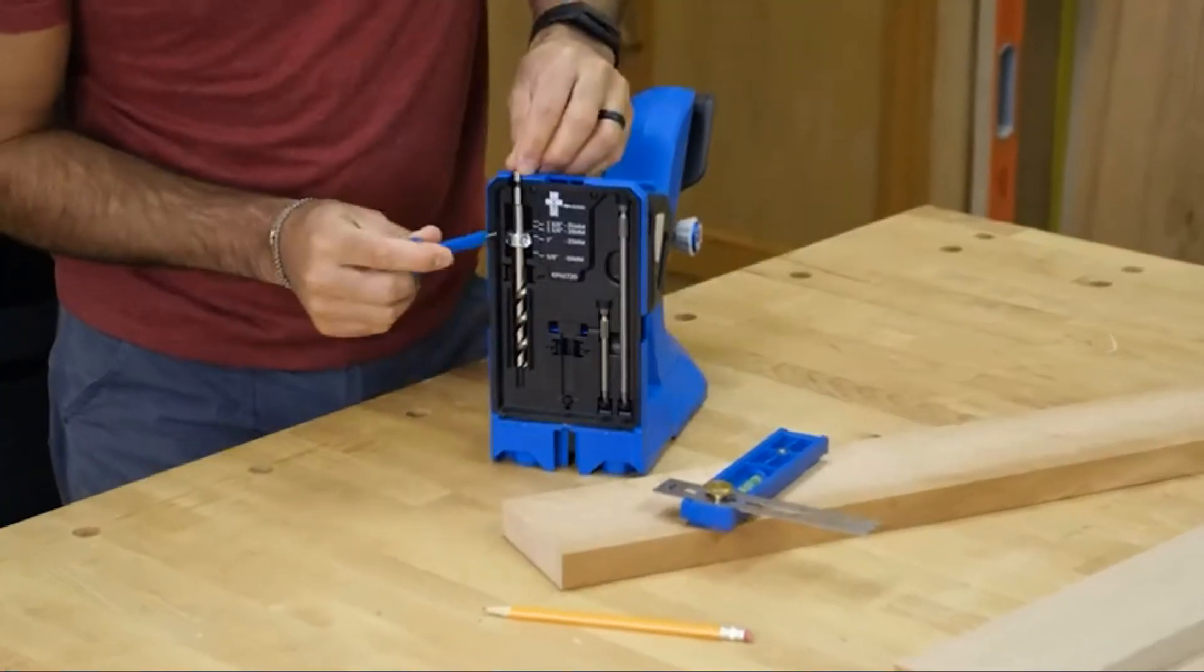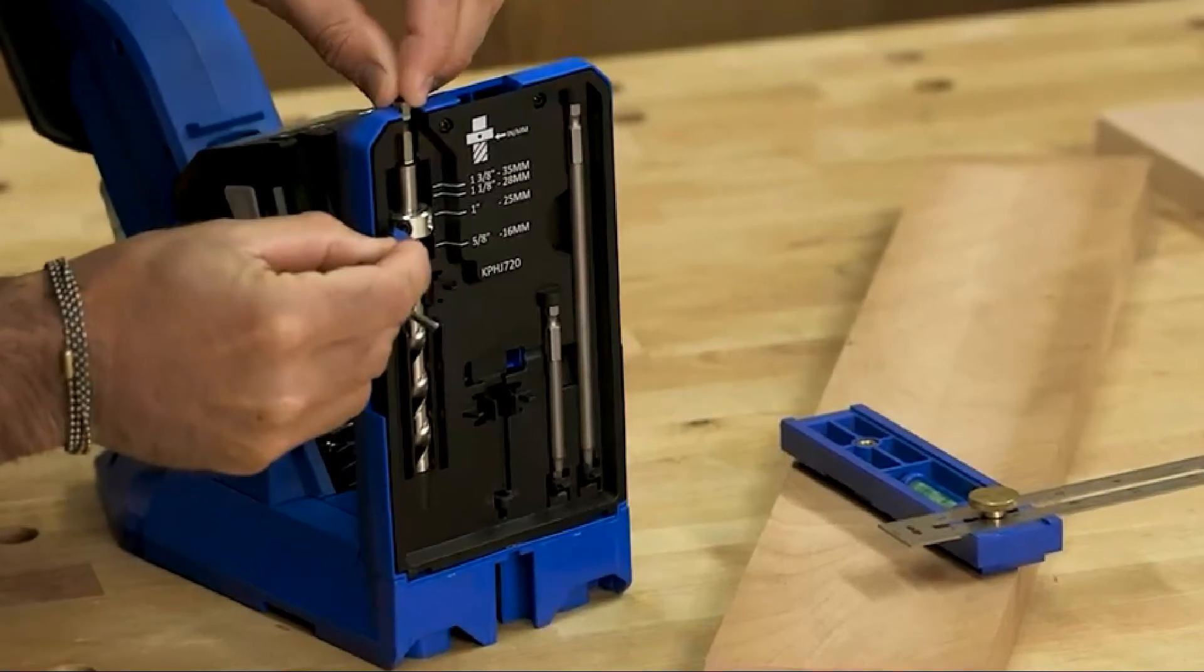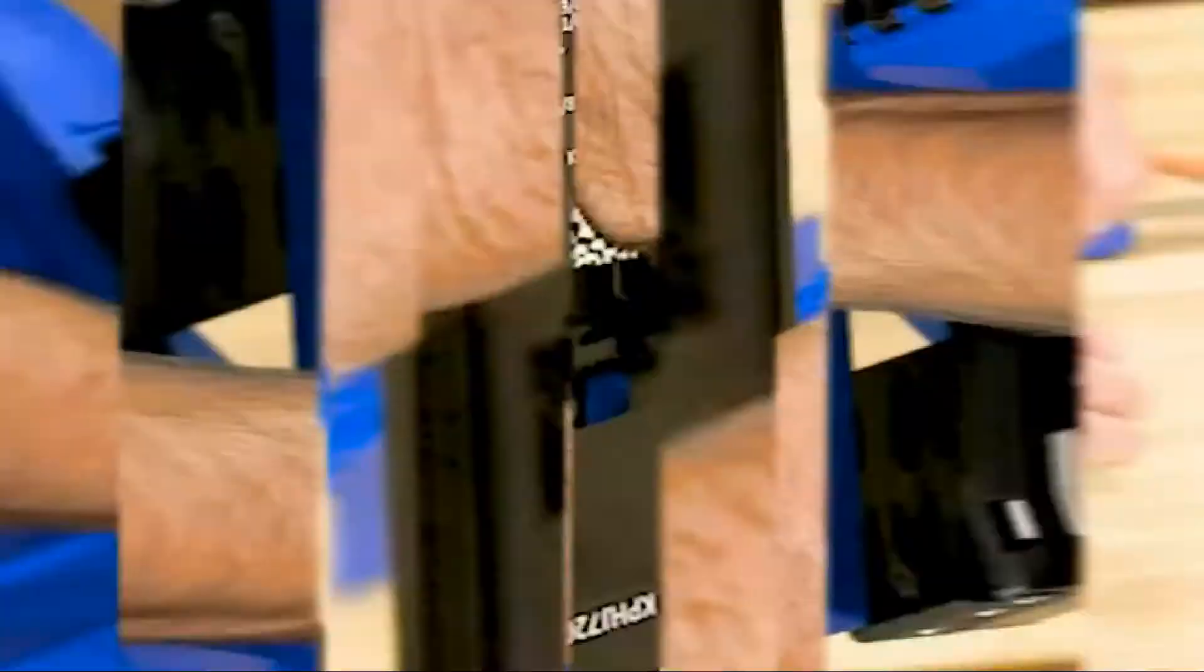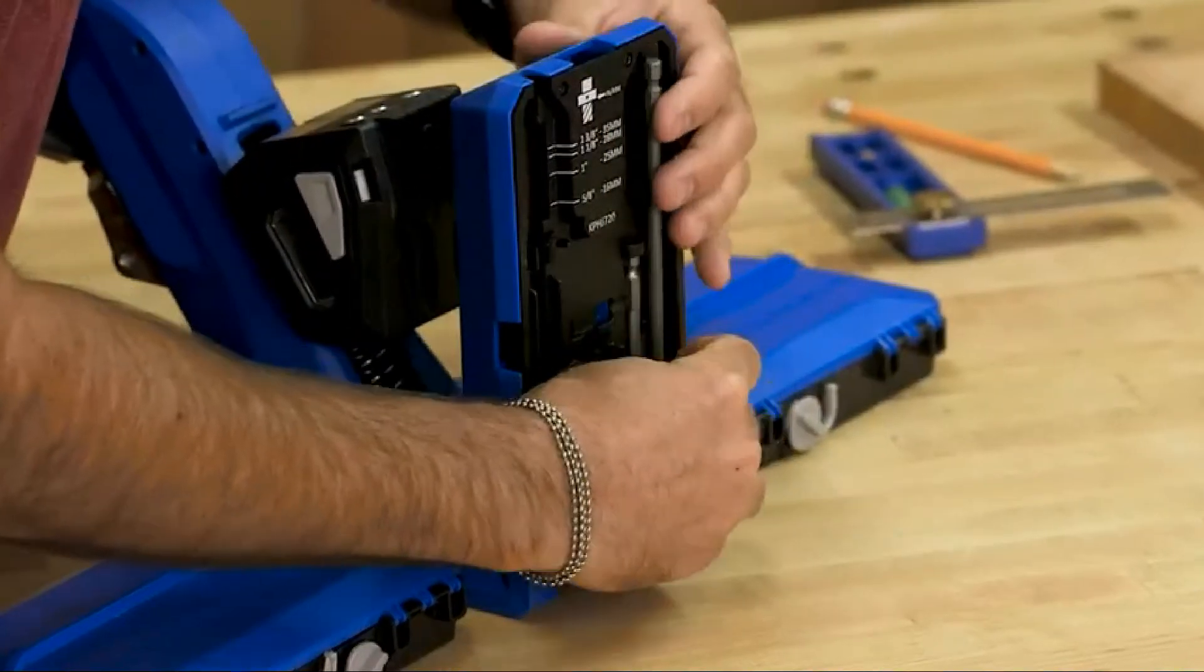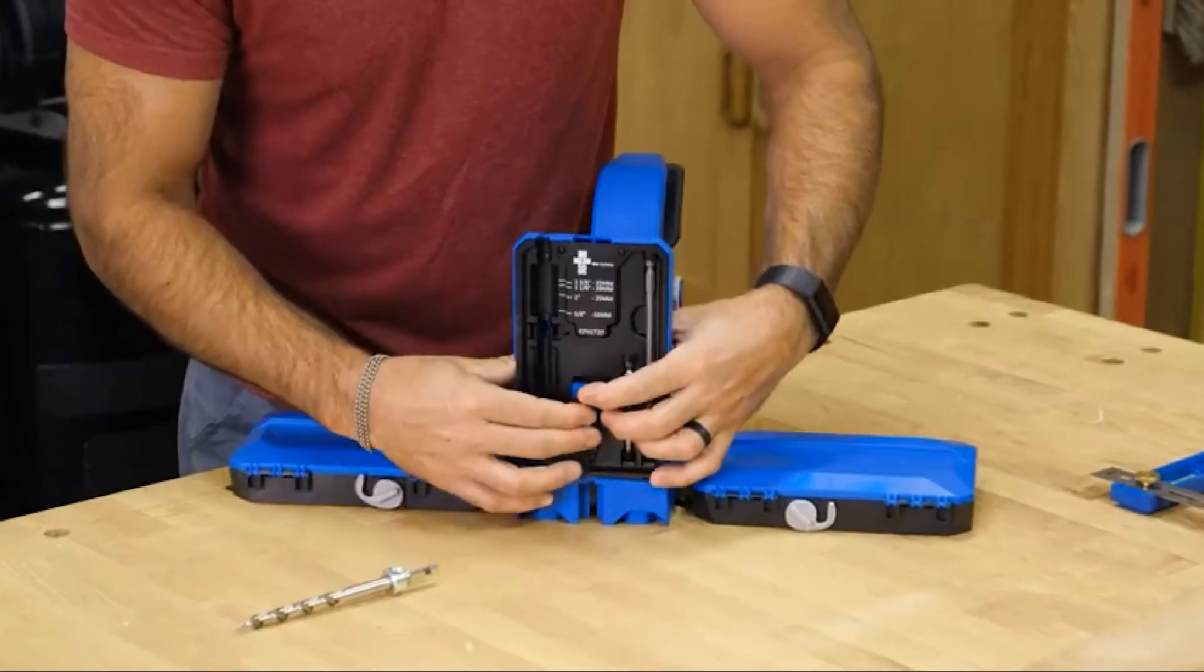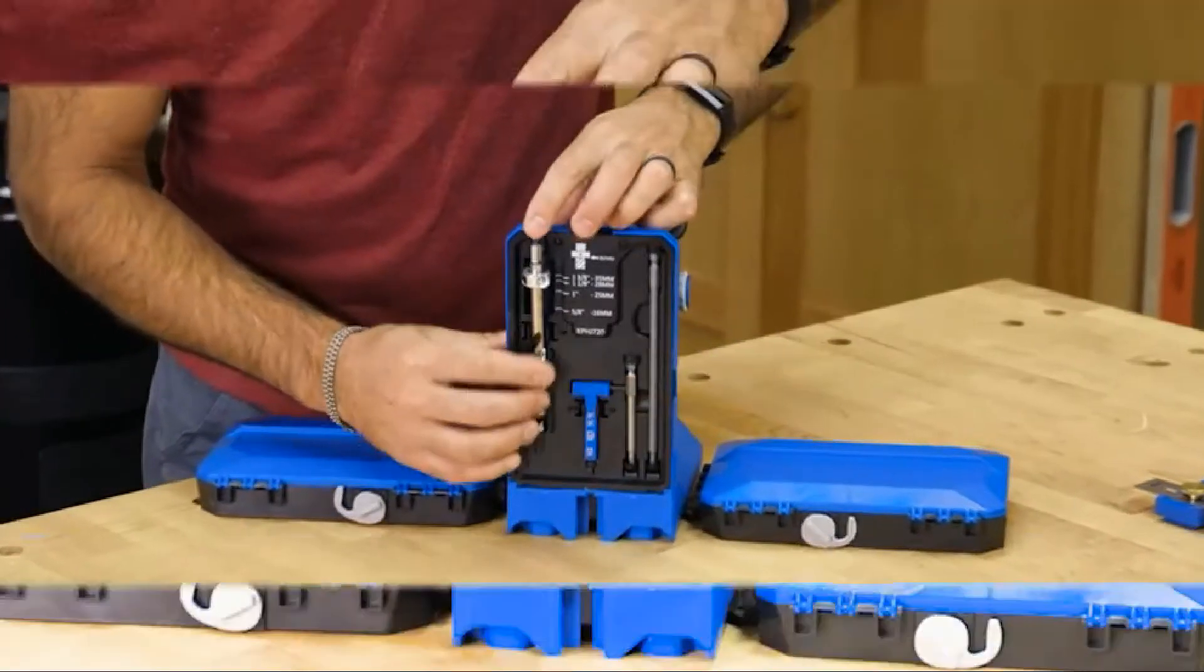If you're working with hardwoods or other materials of different thicknesses, you can use the scale that's built into the jig to set the stop collar at precise eighth inch increments. Alongside that scale you'll even find onboard storage for the pocket hole drill bit, the included six inch and three inch square drive bits, and the material thickness gauge.